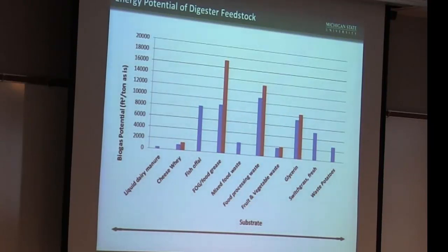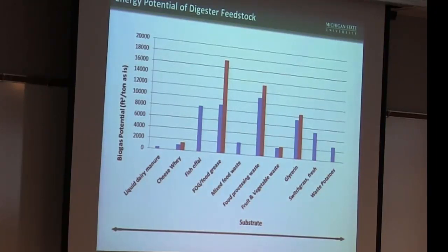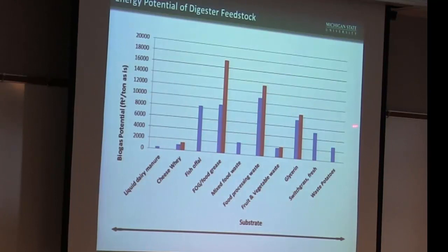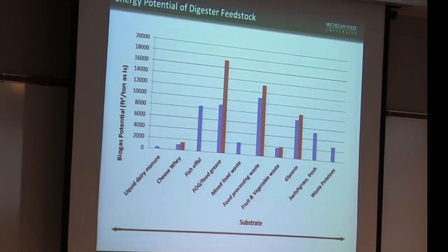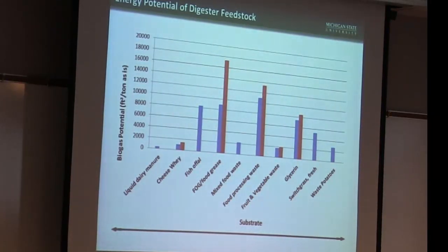The reason these outside materials are so important: looking at gas production potential in cubic feet per ton, manure is down at the bottom — about 30–50 cubic feet of biogas potential per ton. FOG has very high energy density. Food processing waste also very high. Fruit and vegetable waste much higher than manure. This is why we're so reliant on outside substrates — they are energy-dense compared to manure, which is microbial-dense. This has driven us to underperform a little bit in 2014, along with a lot of the mechanical issues.